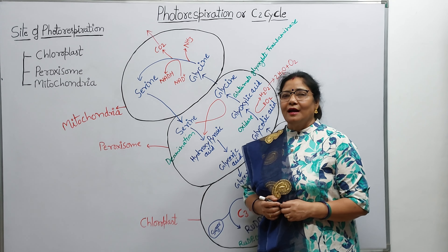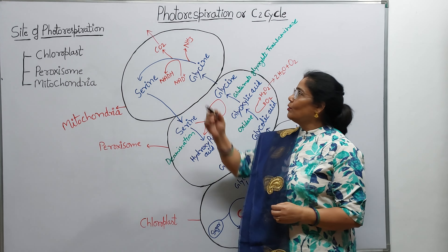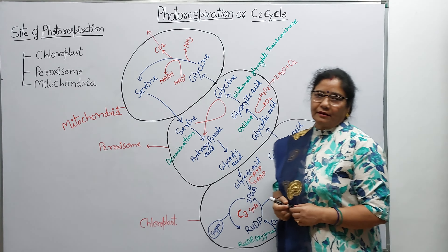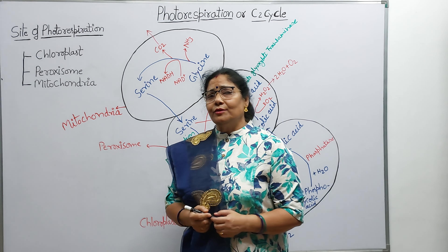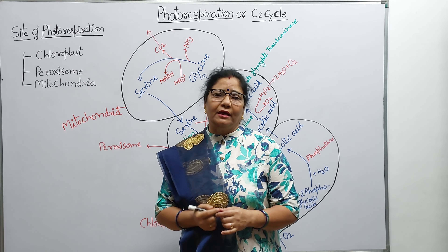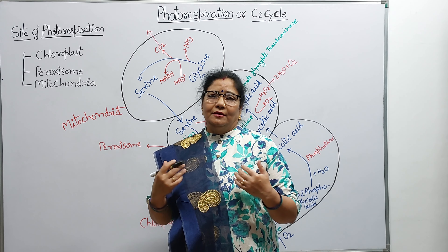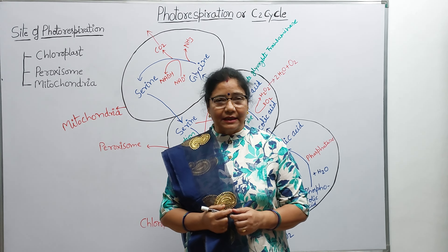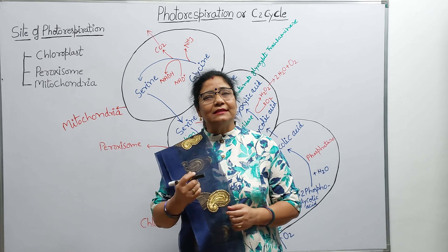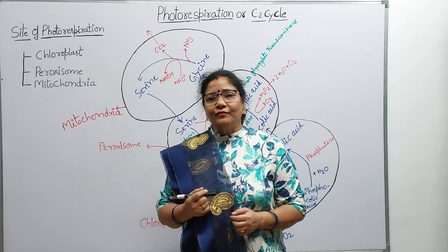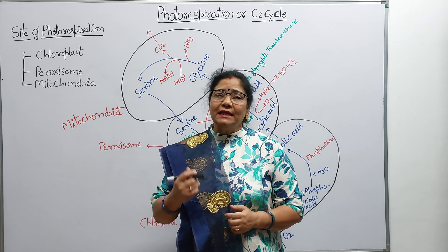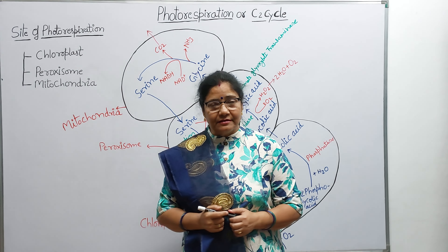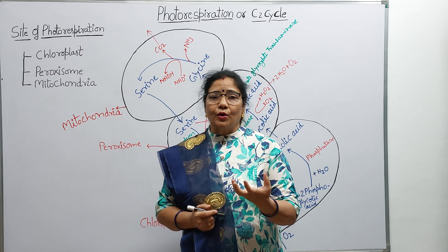Namaskar students, aaj hum C2 cycle aur photorespiration padenge. Hum jante hain ki duniya mein jitne bhi peid-paude hain jo autotrophic hain, they do photosynthesis. Photosynthesis is a process by which green plants synthesize their food material in the presence of light within their chloroplast.